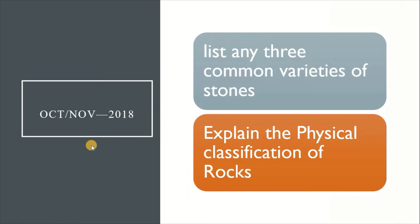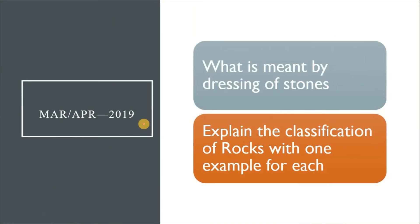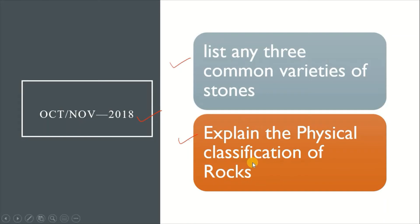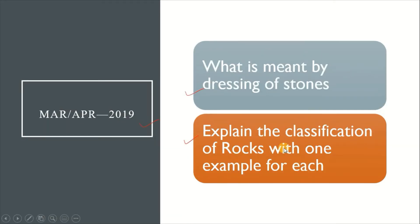In March 2019, the short answer is: what is meant by dressing of stones? We already know that definition. The essay question is: explain the classification of rocks with one example for each. This covers physical classification, geological classification, and chemical classification — three types of rock classification, each with one example.